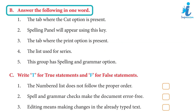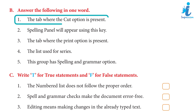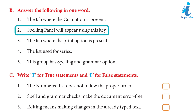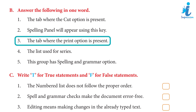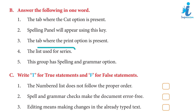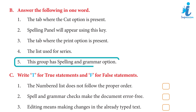B. Answer the following in one word. 1. The tab where the Cut option is present. Answer: Home tab. 2. Spelling panel will appear using this key. Answer: F7. 3. The tab where the Print option is present. Answer: File tab. 4. The list used for a series. Answer: Numbered list. 5. This group has the Spelling and Grammar option. Answer: Proofing group.